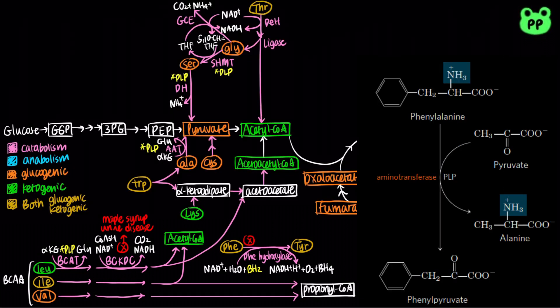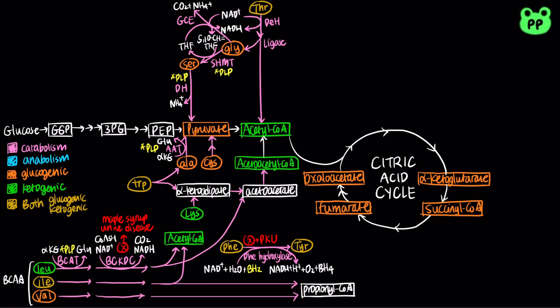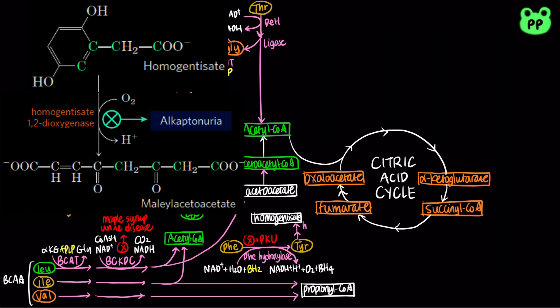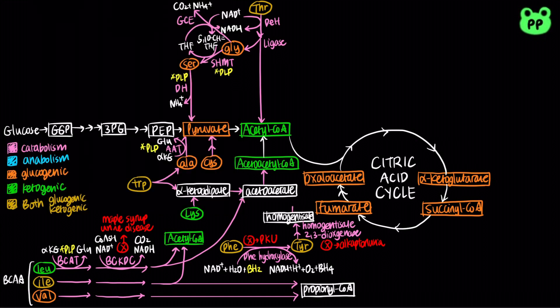In individuals with PKU, phenylalanine is converted to phenylpyruvate instead, which accumulates in blood and tissues and is excreted in urine. The symptoms of PKU can be prevented by limiting the consumption of phenylalanine. Tyrosine produced from phenylalanine is further degraded into homogentisate by tyrosine aminotransferase followed by dioxygenase. Homogentisate is then oxidized to maleylacetoacetate by homogentisate-1,2-dioxygenase. Genetic defects in homogentisate-1,2-dioxygenase result in alkaptonuria, which causes dark pigment in urine and can lead to arthritis later on. Ultimately, phenylalanine and tyrosine degrade to fumarate and acetoacetate, which is converted to acetoacetyl-CoA.